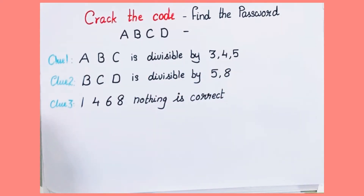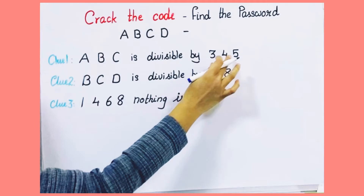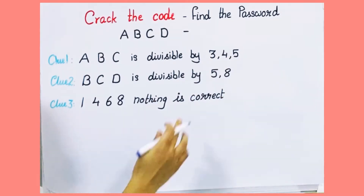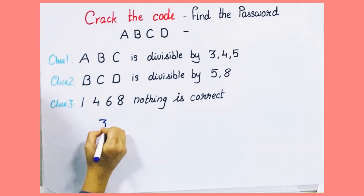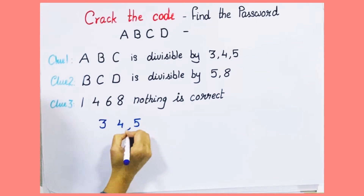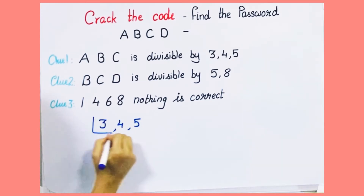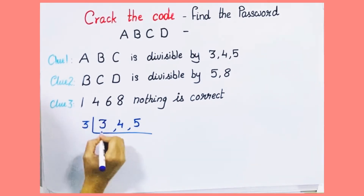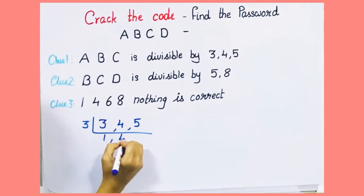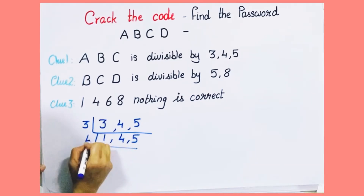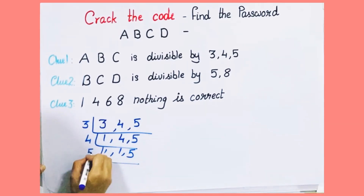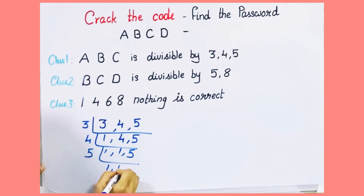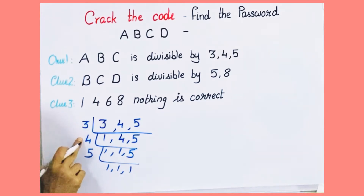To find a number which is divisible by 3, 4, and 5, we have to find the LCM of these. So LCM of 3, 4, and 5 — let's do prime factorization. It's 3 × 4 × 2 × 1 × 5 = 60.